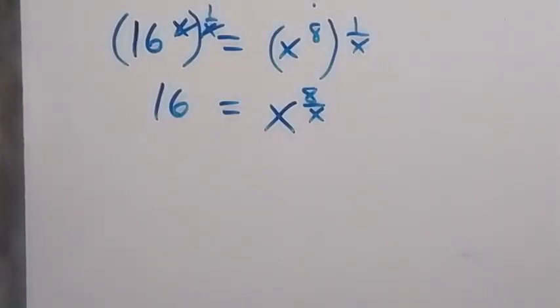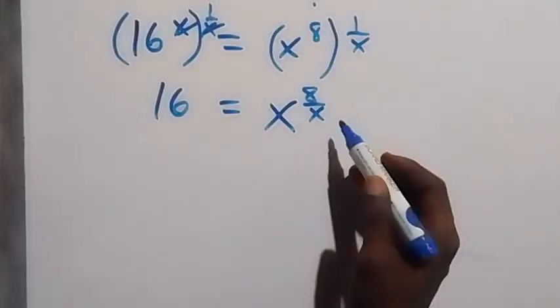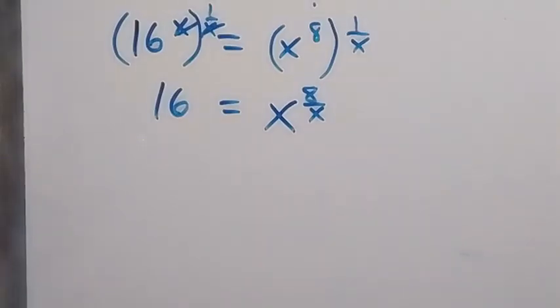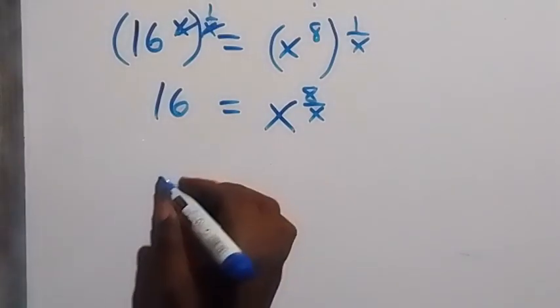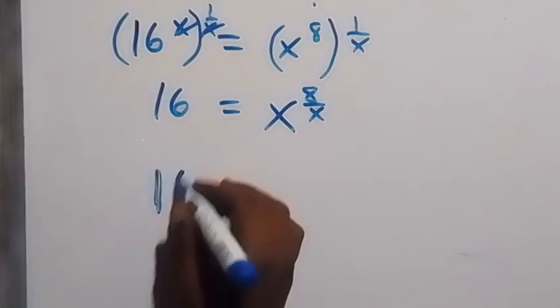And then from here, also we can remove this 8 on this side and multiply both powers by 1 over 8. So we have 16 raised to the power of 1 over 8.